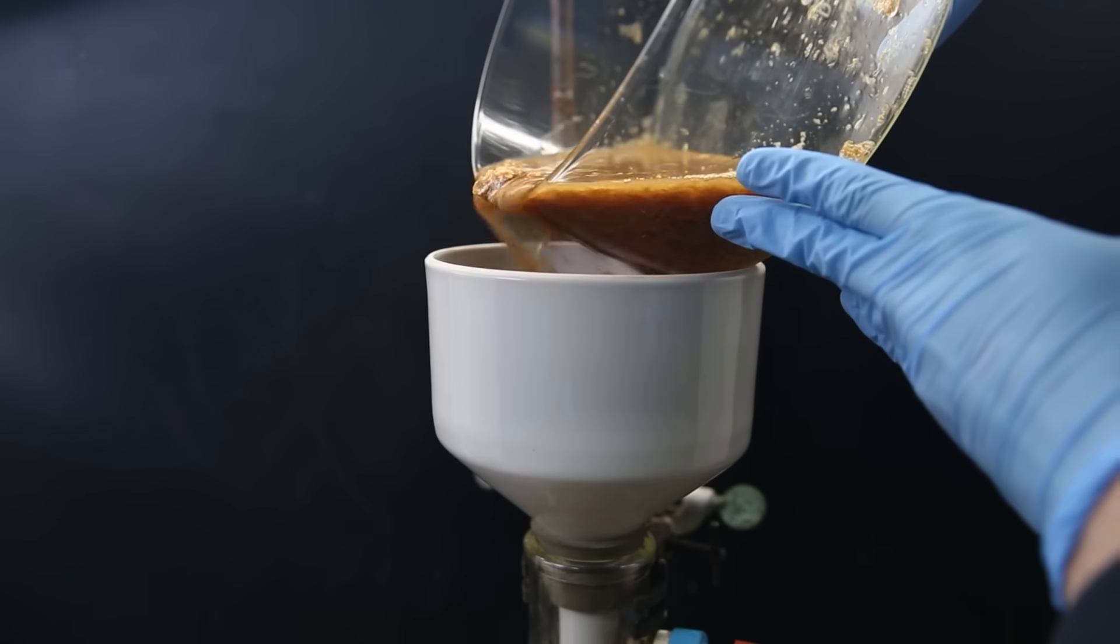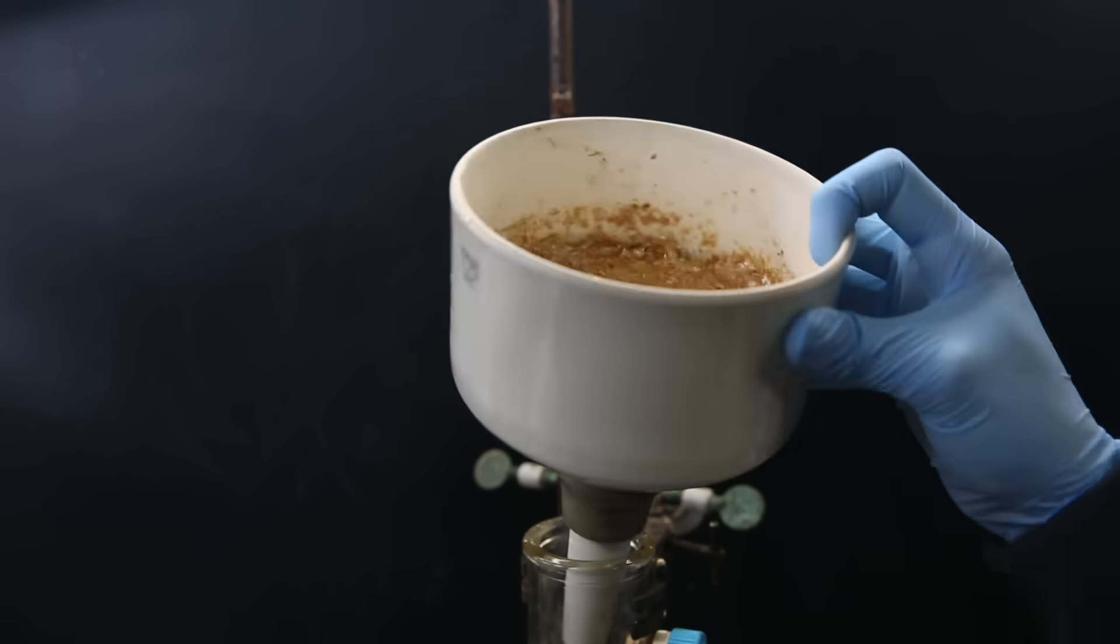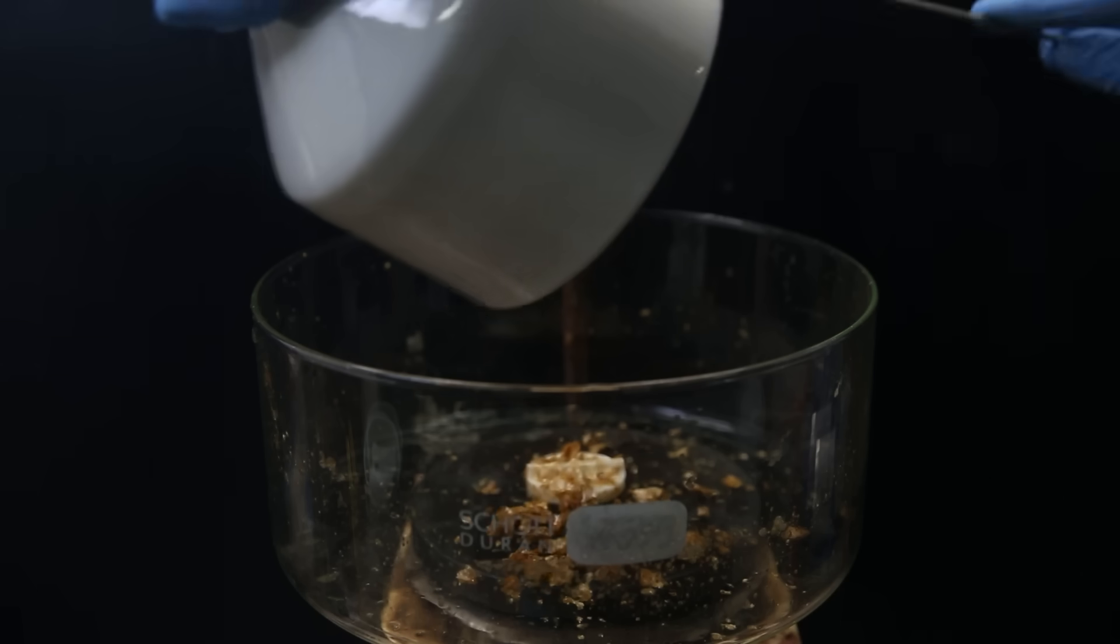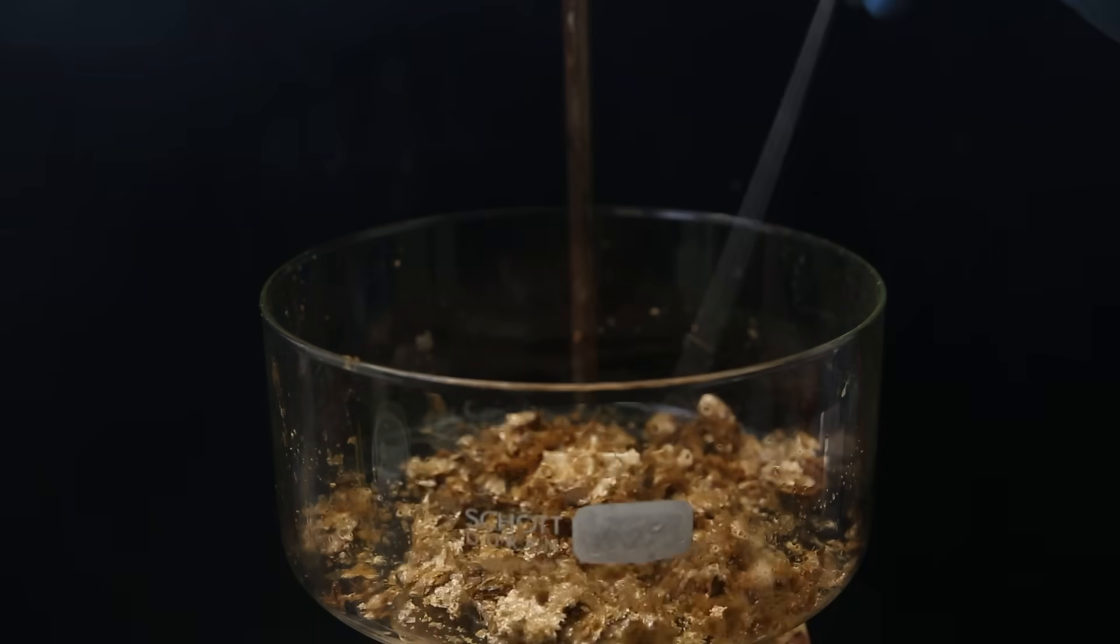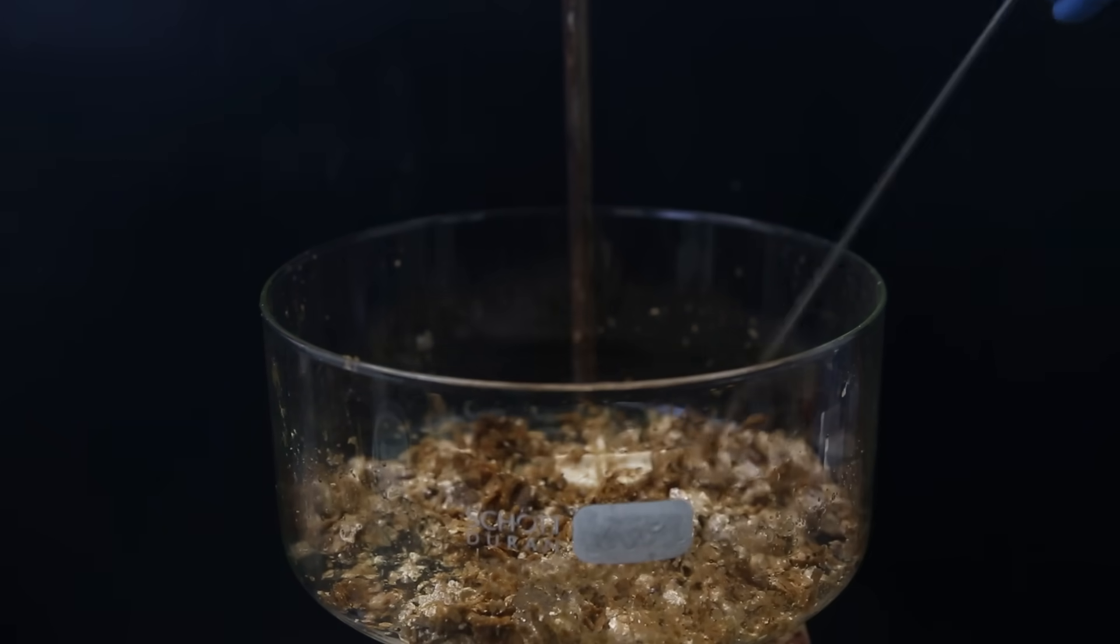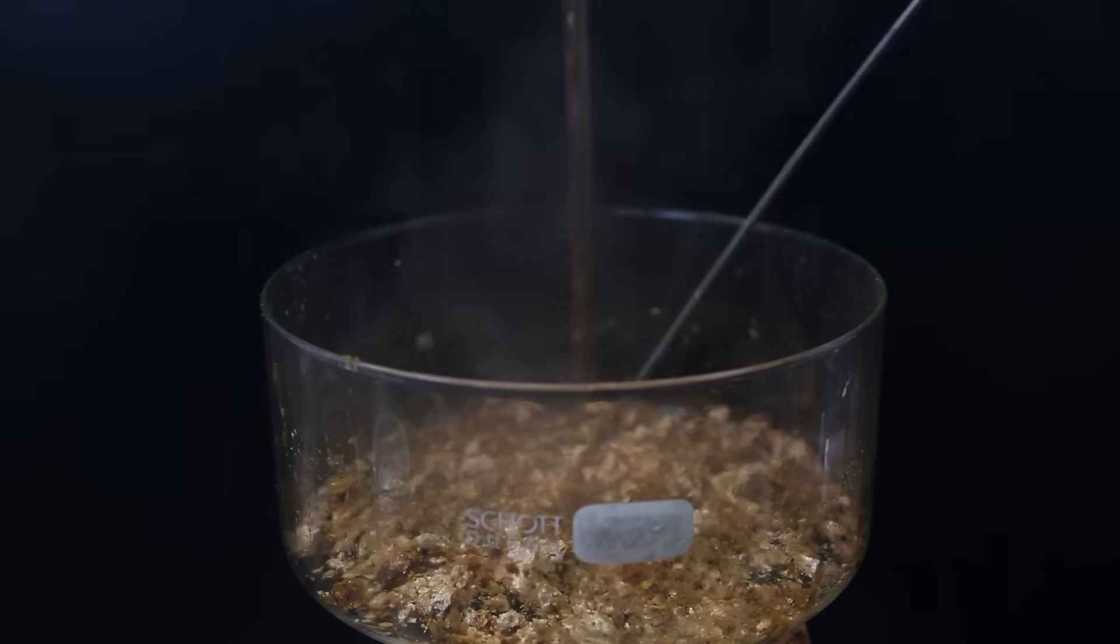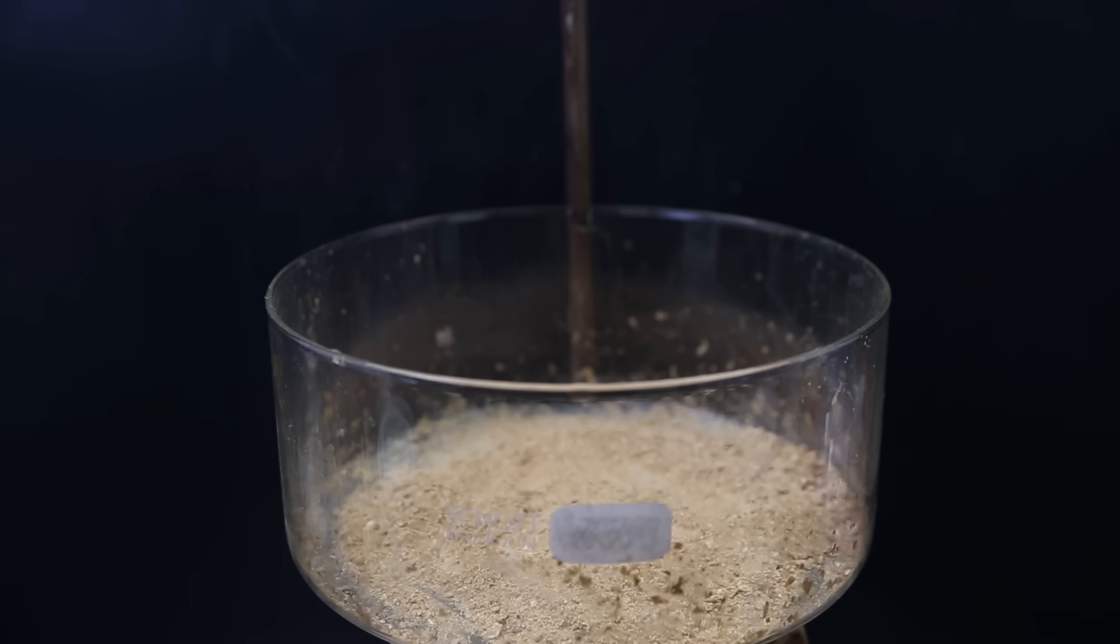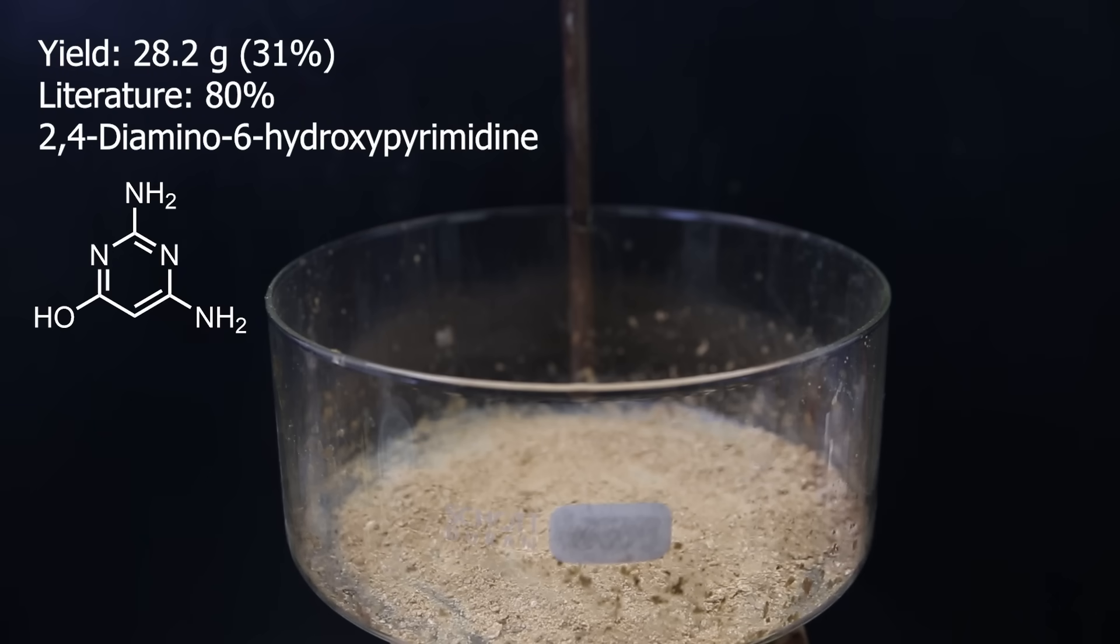It now looks better and I filter it again to collect the solid. The solid is still very wet but the compound is very stable. So I can just heat it to above 100°C to dry it out completely. After a while it became dry and I crushed it all between my fingers. In the end I am left with 28.2 grams of what seems to be a slightly impure product, which is a yield of 31%, a lot worse than literature. I blame the beakers and the dirty sodium ethoxide. Either way I can continue with this to the next step.